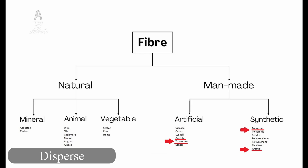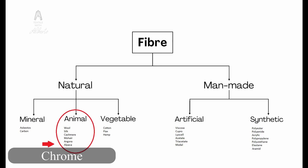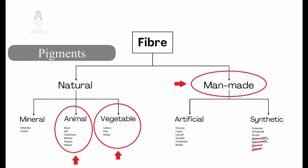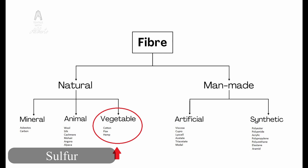Then we have disperse dye stuffs to dye polyester, acetate, or some kinds of aramid fibers. Then we have chrome dye stuffs that were used for wool or protein fibers, but are no longer used because they are not environmentally friendly. Then we have pigment base for all fibers — these pigments can dye all fibers but don't bond with the fiber, so they have a bonding agent in the blend. Then we have sulfur dyes used for cotton or linen, but they are highly polluting and almost not used anymore.